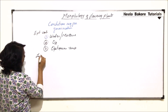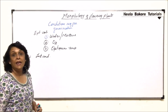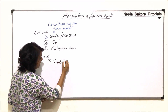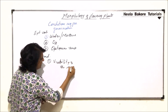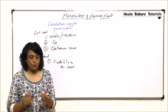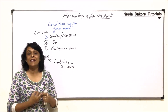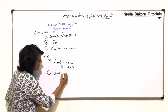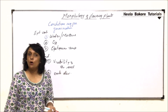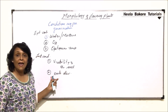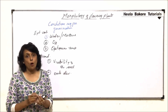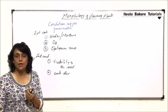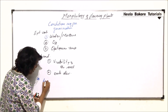Since these are external conditions, there should be some internal conditions also. Internal conditions include the viability of the seed — whether the seed is viable or not, whether it can germinate or not, which is dependent on the internal environment of the seed. Second is embryonic development — whether the embryo is properly developed or not. Some seeds also require a special condition: low temperature.